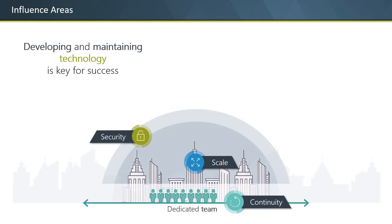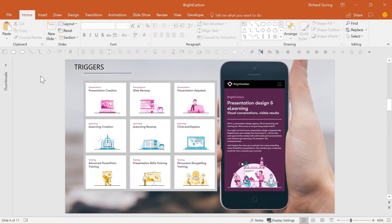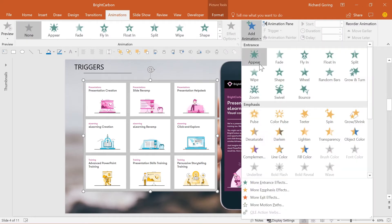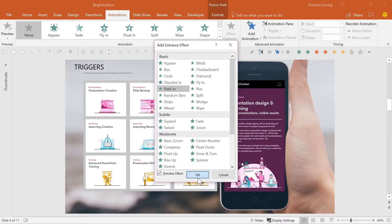This flexible approach to what content appears is done using trigger animations. Trigger animations are easy and basic — the difficulty comes when looking for ways to implement them well. On this slide there's a screenshot of the Bright Carbon website, which I may just want to show briefly, tell you it's well worth checking out and then move on. Or you may be interested in knowing more about the services that we offer, which is this set of icons here. To give us choice, select the service icons image, go to the animation tab on the ribbon and add an animation — in this case, peek in, set to come in from the right.